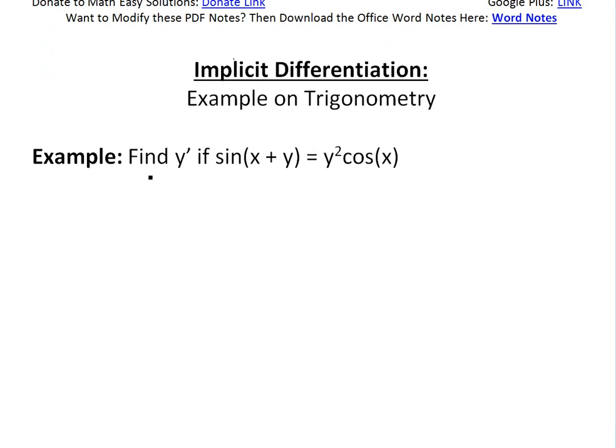This example I'm going to go over: find y prime if sine of x plus y equals y squared times cos of x. With implicit differentiation, we can find a derivative implicitly or indirectly without having to solve for y as a function of x. I don't even know if you can solve for y in terms of x; it's just going to be hard in this example.